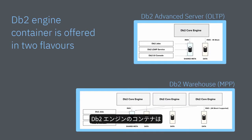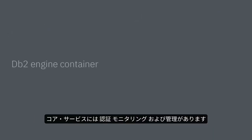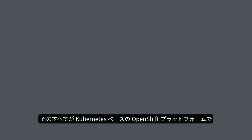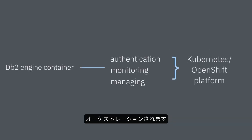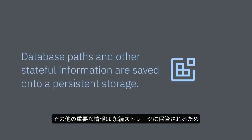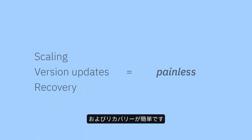The DB2 engine container is deployed alongside an ecosystem of containers that provides core services which include authentication, monitoring, and managing, all orchestrated via Kubernetes' OpenShift platform. Since the DB2 instance home, database paths, and other stateful information is saved onto persistent storage, the DB2 engine container can be recreated at will, which makes scaling, version updates, and recovery painless.